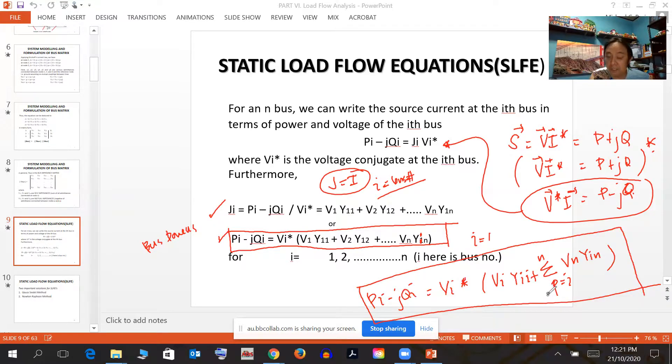The current equation, J here is current, equals P minus jQ_i all over V_i. By applying this and expanding, P minus jQ_i equals V_i conjugate times the sum of V_1Y_i1 plus V_2Y_i2 and so on up to V_N Y_iN. You can see there is a pattern.